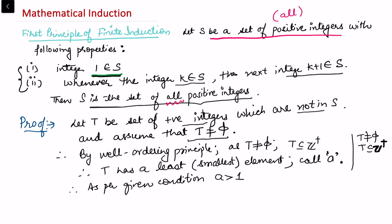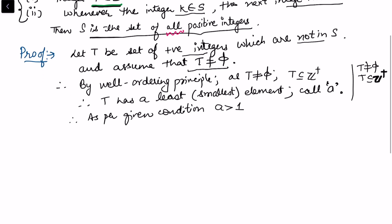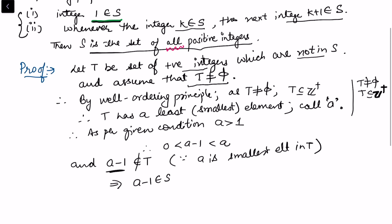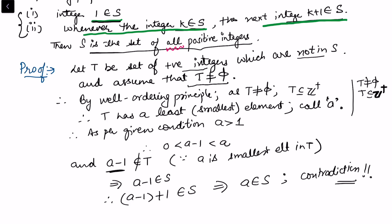Since a is the smallest element in T, a minus one does not belong to T. This implies that a minus one belongs to S. But now look at the second condition of S: whenever integer k belongs to S, the next integer k plus one also belongs to S. So if a minus one belongs to S, then a minus one plus one — that is, a — must belong to S. This contradicts our choice of a being in T.